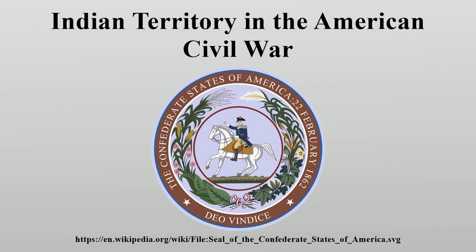After refusing to allow Creek lands to be annexed by the Confederacy, Creek Principal Chief Opoth Leahola led the Creek supporters of the Union to Kansas, having to fight along the way. Leaders from each of the five civilized tribes, acting without the consensus of their councils, agreed to be annexed by the Confederacy in exchange for certain rights, including protection and recognition of current tribal lands. After reaching Kansas and Missouri, Opoth Leahola and Native Americans loyal to the Union formed three volunteer regiments known as the Indian Home Guard.